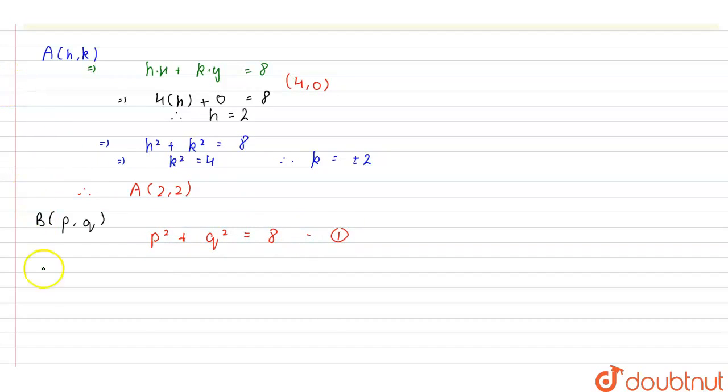Now, using distance formula, we can write that AB² is equal to (p-2)² plus (q-2)². Now, in the question, we have AB is equal to 4. Therefore, this becomes 16 is equal to p² plus q² minus 4 into (p plus q) plus 8.